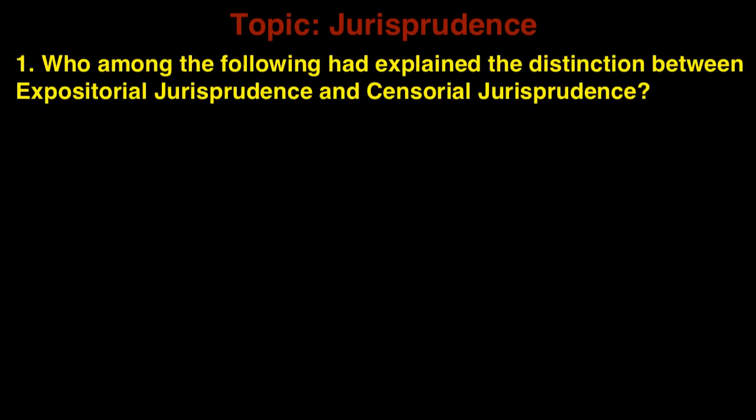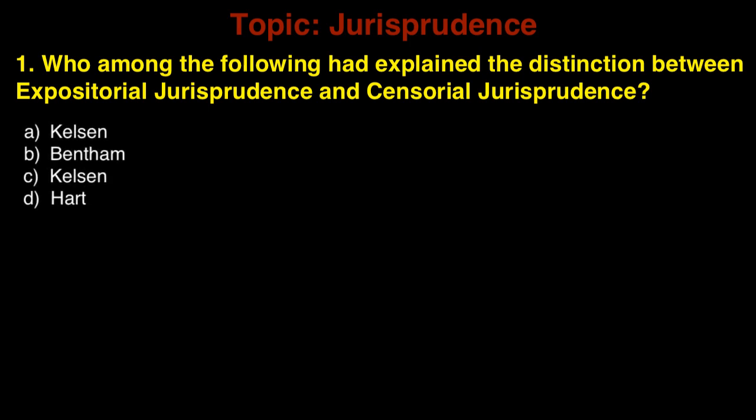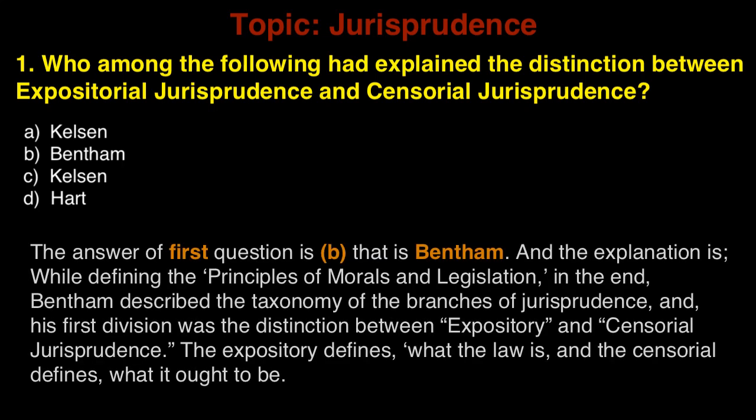Question 1: Who among the following had explained the distinction between expositorial jurisprudence and censorial jurisprudence? A. Kelsen, B. Bentham, C. Kelsen, D. Hart. The answer to the first question is B, that is Bentham.